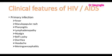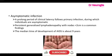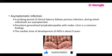The clinical features of HIV/AIDS. Primary infections include fever, maculopapular rash, pharyngitis, lymphadenopathy, myalgia, Bell's palsy, diarrhea, headache, and meningoencephalitis. Asymptomatic infection involves a prolonged period of clinical latency following primary infection during which individuals are asymptomatic. Persistent generalized lymphadenopathy with nodes less than 2 cm is a common finding. The median time of development of AIDS is about 9 years.